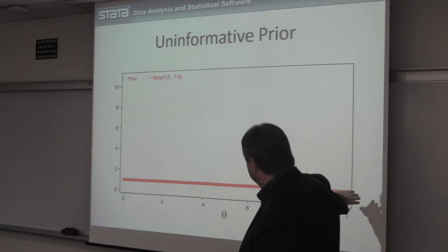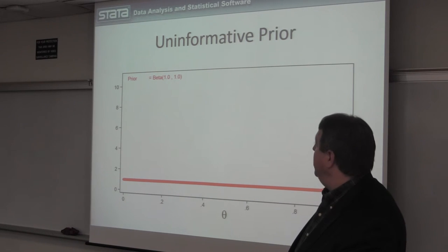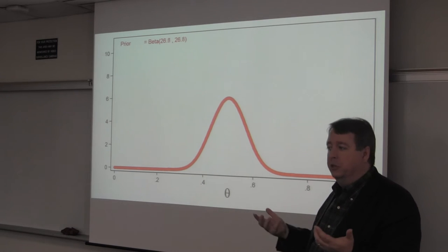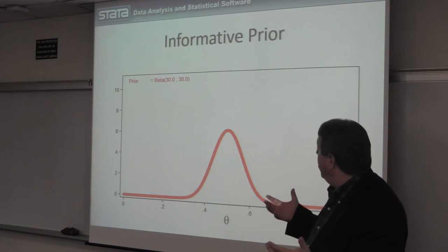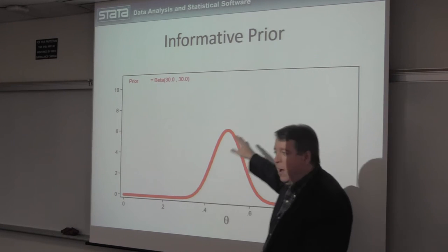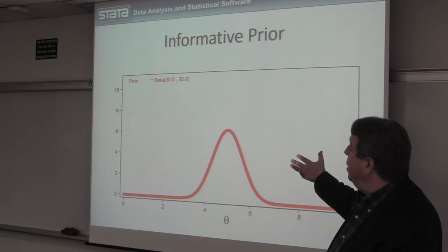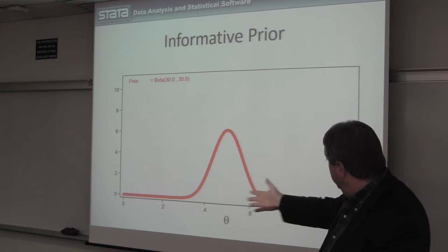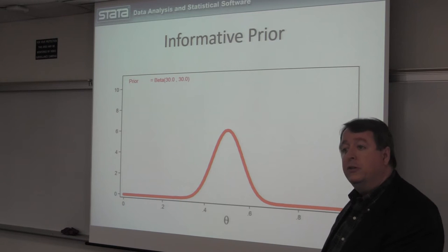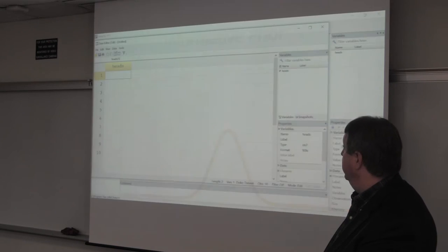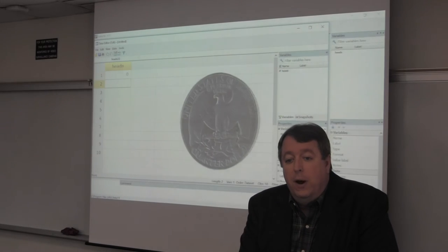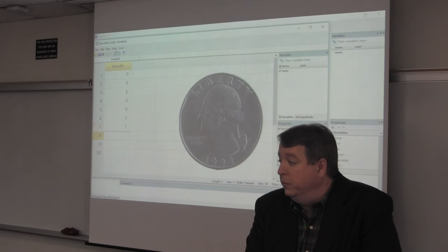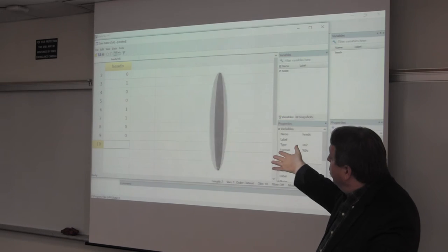If I've never seen this coin and know nothing about it, I could say the probability of theta could take any value between 0 and 1 with equal probability — an uninformative prior. Mathematically, I can do this with a beta(1,1) distribution, which is a uniform flat distribution. But thinking about it for more than a couple of minutes, it seems unlikely I'd toss 10 heads or 10 tails in a row, so I might want to describe my belief as closer to 0.5 but not exactly. So I might use a beta(30,30) distribution — that's where I think it is more likely to be. This is my mathematical expression of belief, no data involved.